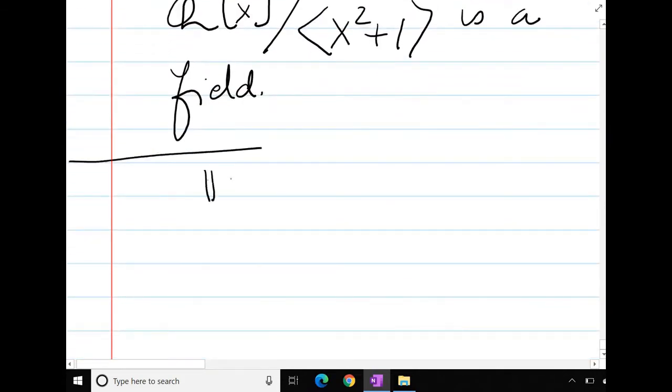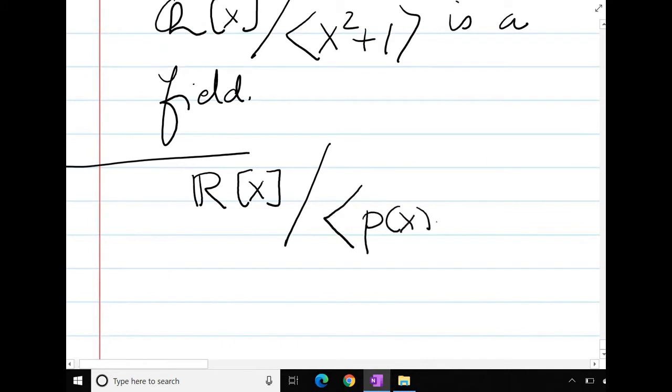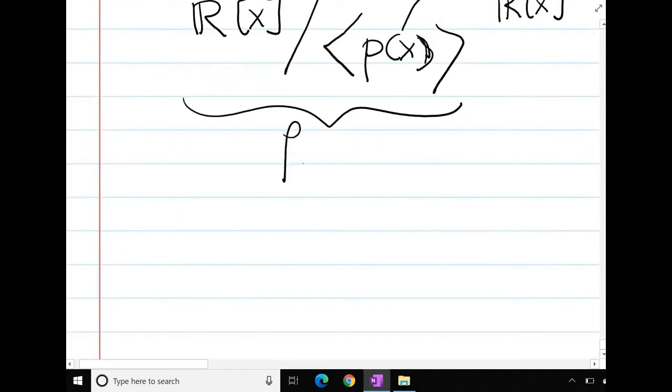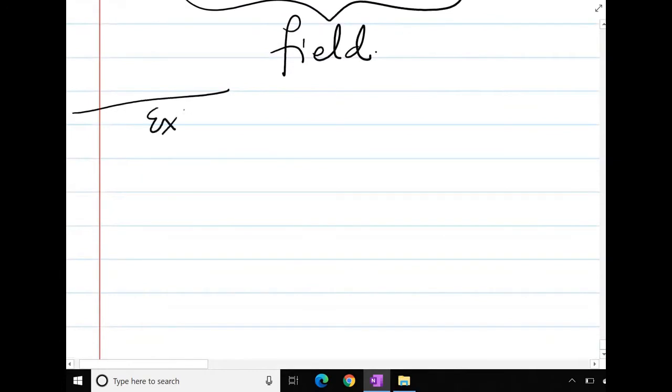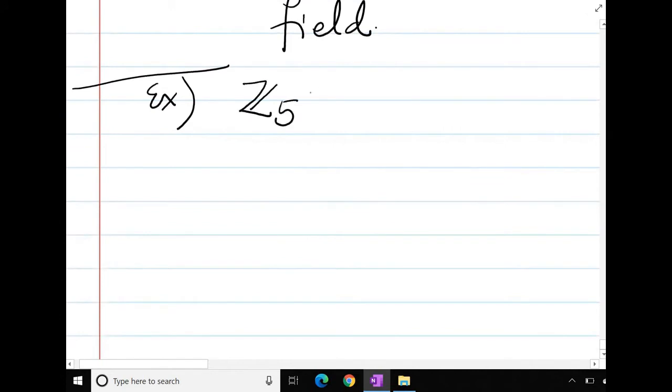For example, you can take R[x], but any polynomial p(x), if p(x) is irreducible in R[x], then this will again become a field by the same theorem. For example, I am taking Z_5[x] quotient (x squared plus 3x plus 2).